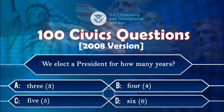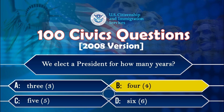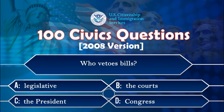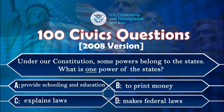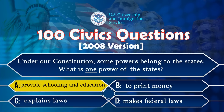We elect a president for how many years? Four. Who vetoes bills? The president. Under our Constitution, some powers belong to the states. What is one power of the states? Provide schooling and education.